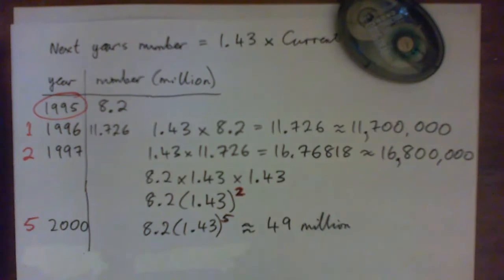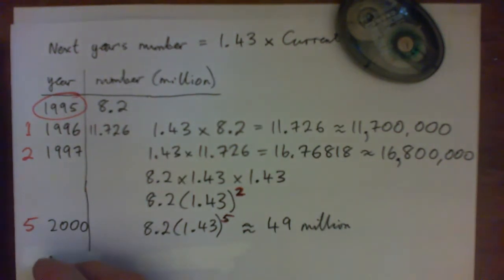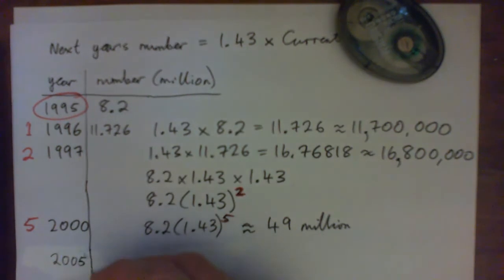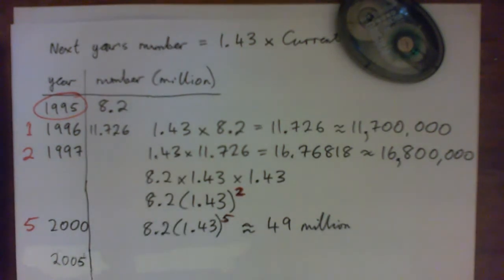Okay, so in our textbook, it asks us to come up with a formula and also figure out the number in the year 2005. I'm going to do it a little bit backwards. I'm going to do the year 2005 first, and then I'm going to do the formula. So let's figure out what it would be in the year 2005. All right, so press pause on the video and try that yourself.